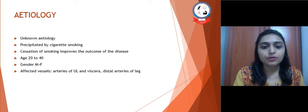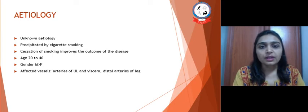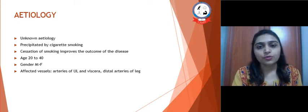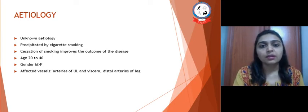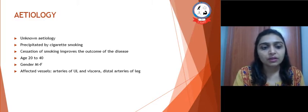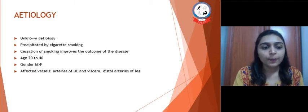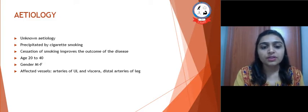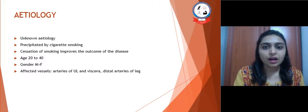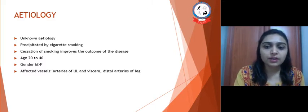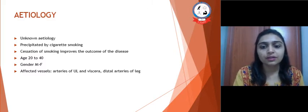Cessation of smoking improves the outcome of the disease. It is usually seen between the age of 20 to 40 years, and males are more affected than females, as many male persons smoke. Affected vessels are arteries of the upper limb and viscera and distal arteries of the leg. Distal arteries are mostly affected, which can be a differential diagnosis from other arterial diseases.